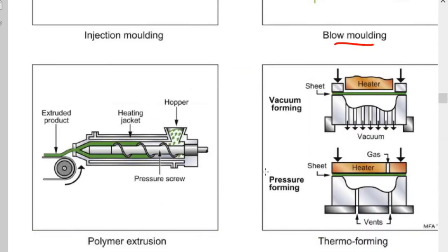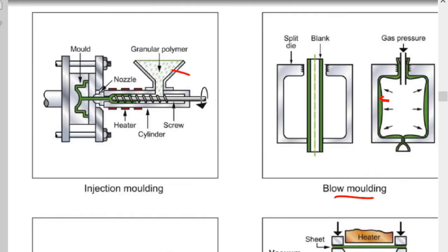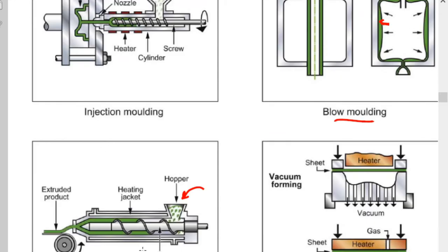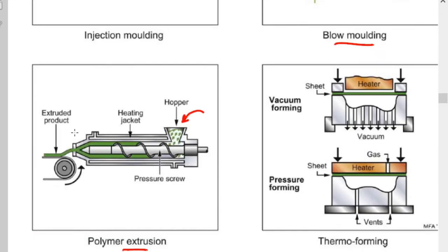Polymer extrusion is similar to injection molding — we have a hopper in which pieces of polymer are poured, then crushed and sheared inside a cylinder-like structure. The difference is that instead of filling into a mold cavity, the material comes out through an aperture whose cross-section is the required cross-section of the desired component. A long, slender-like structure comes out.